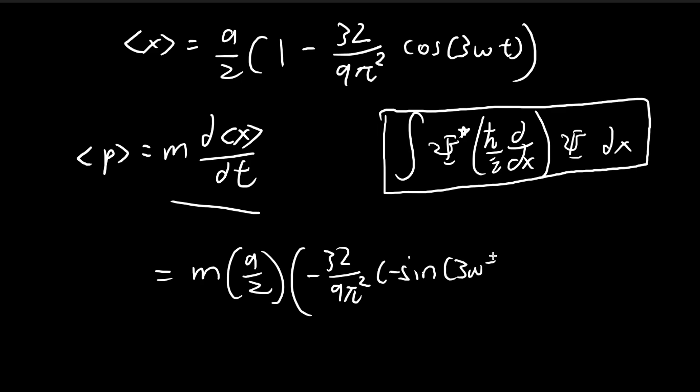So cosine becomes negative sine. And then we multiply by 3 omega because of the chain rule. So the negative sine, you cancel out. So this becomes 16, the 3's, they cancel out. So we're left with 16 ma 3 pi square sine 3 omega t.